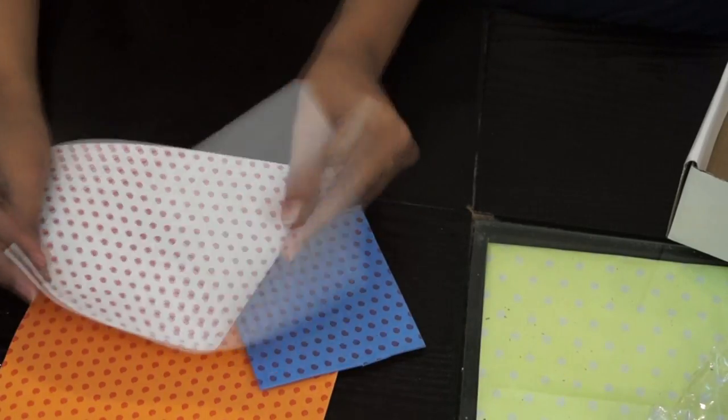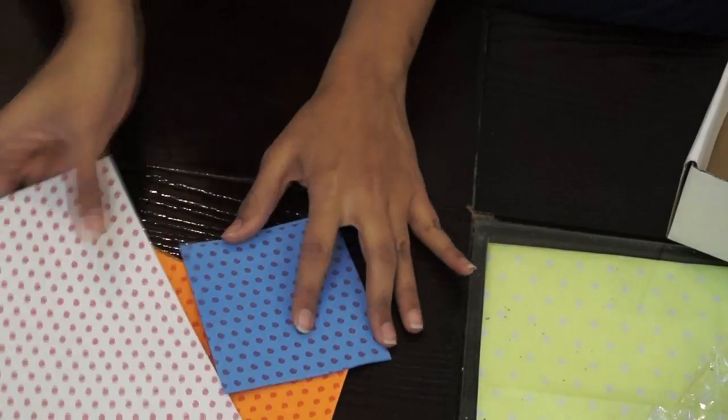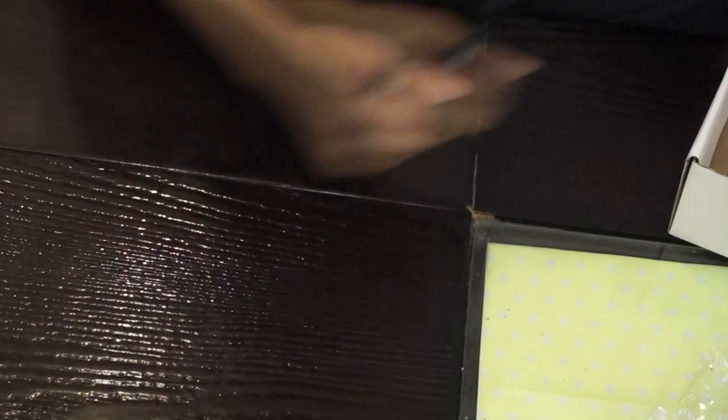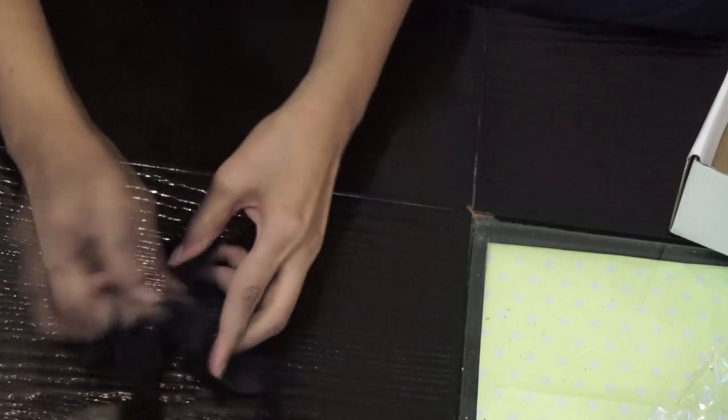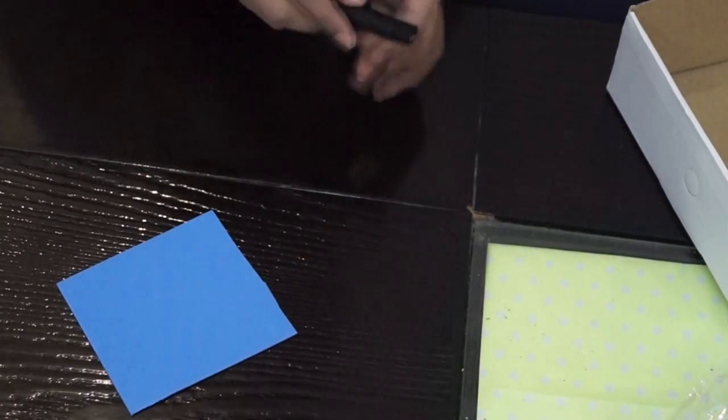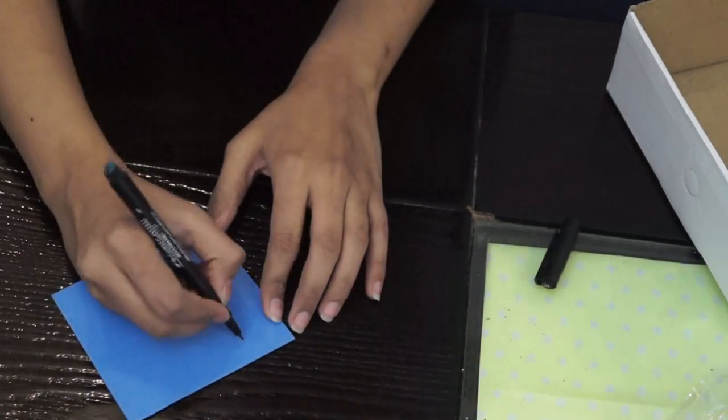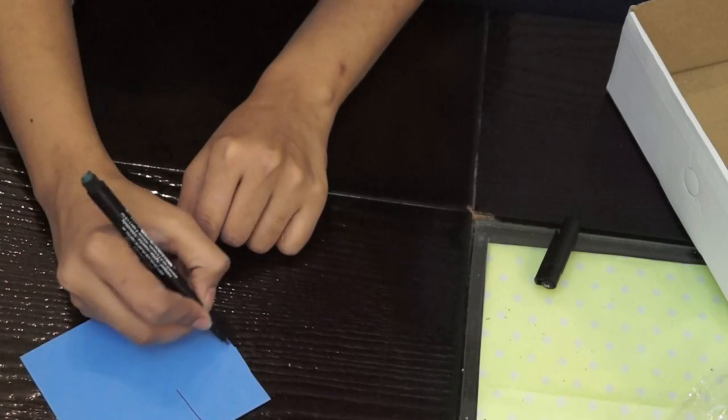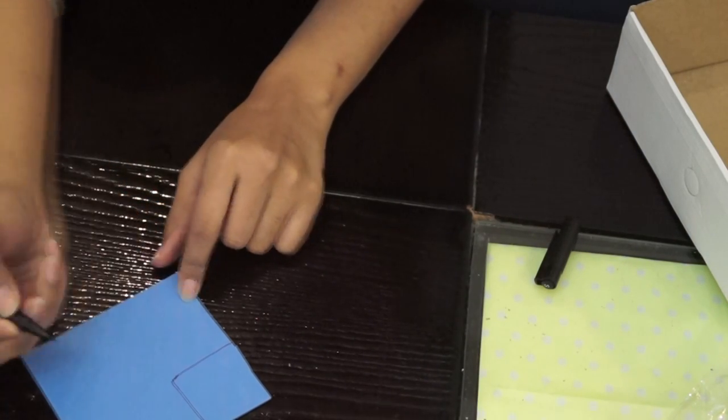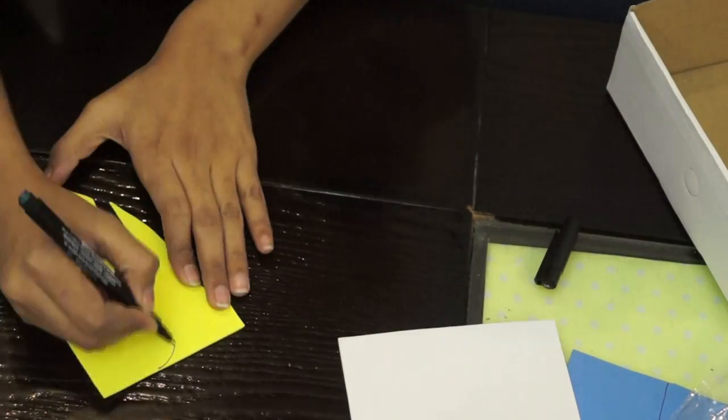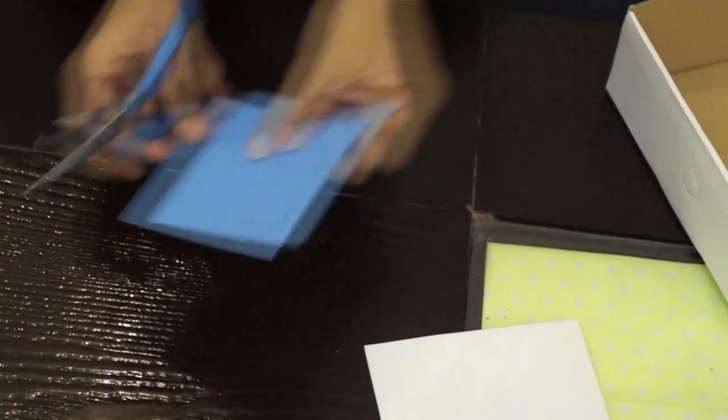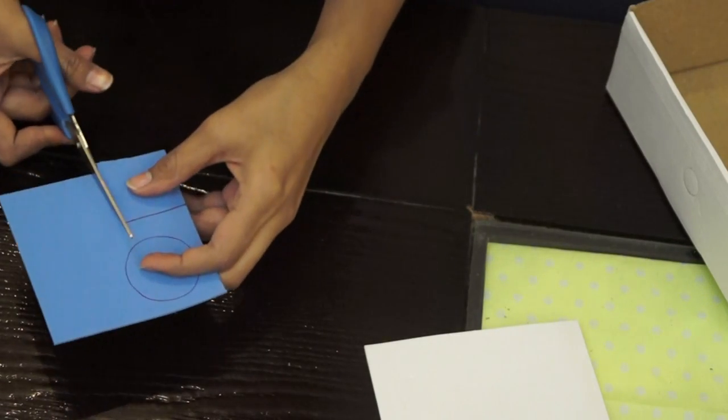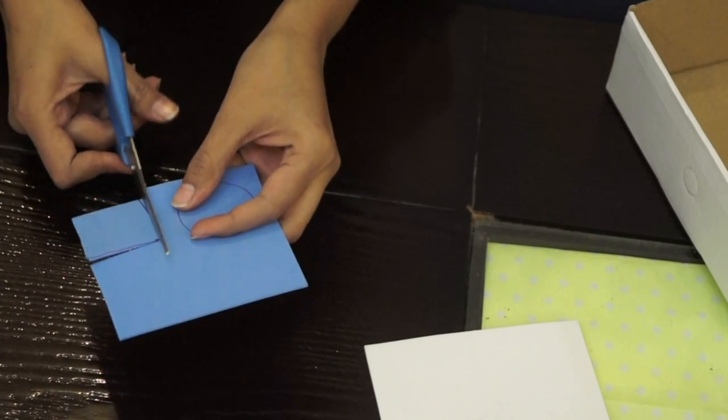So for the next idea, we need some foam sheets, a pen. Next we need velcro tapes. And then at last we need some cardboard. So for this, we first need to take your foam sheet, put it upside down and then make any kind of shape, square, rectangle, circle, any kind of shapes. And then take your scissors and cut out the shape which you have made on your foam sheet.